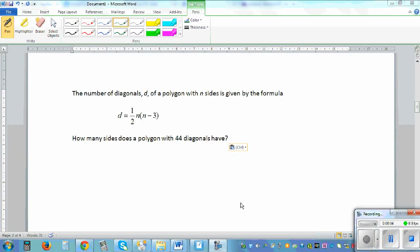The number of diagonals d of a polygon with n sides is given by the formula d equals one-half n times n minus 3, where d is the number of diagonals and n is the number of sides. The question is, how many sides does a polygon with 44 diagonals have?